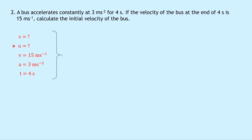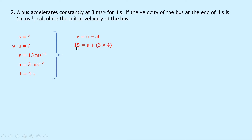So writing down the equation, we have V equals U plus AT. Substituting in the numbers, we get 15 equals U plus three times four. So if I take three times four away from this side, I subtract 12 from both sides, then I end up with 15 minus 12, which is three meters per second.